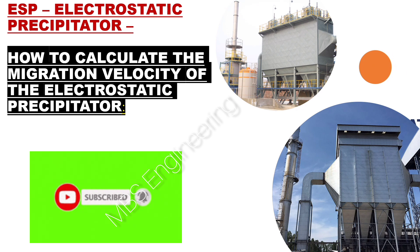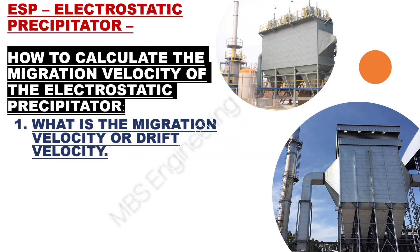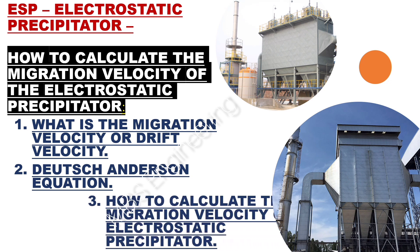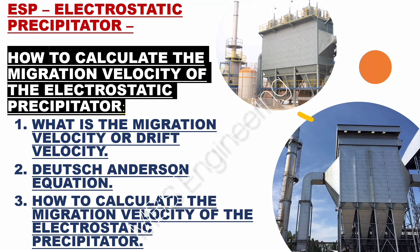We will discuss in the detailed description given below. Point number 1: What is the migration velocity or drift velocity? Point number 2: Understand the Deutsch-Andersen equation. Point number 3: How to calculate the migration velocity or drift velocity of the electrostatic precipitator.